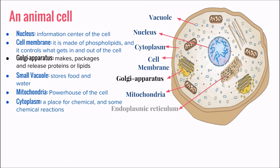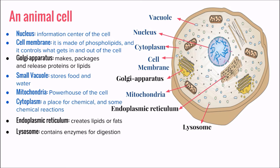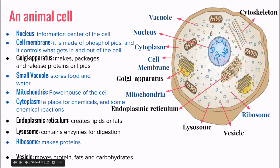Then we have the endoplasmic reticulum which makes fats or lipids. Then we have the lysosomes which filter waste by digesting them using enzymes. Then we have the ribosomes — these are very small; they convert messenger RNA into protein, or they simply make protein. Then they move protein, fats, and carbohydrates throughout the cell. And there is the cytoskeleton which supports other organelles and moves synthesized protein.